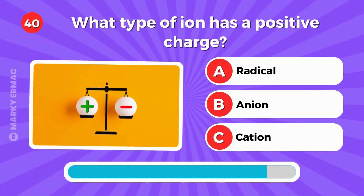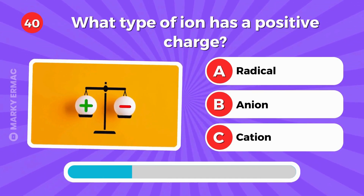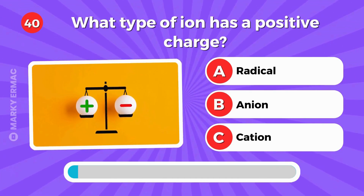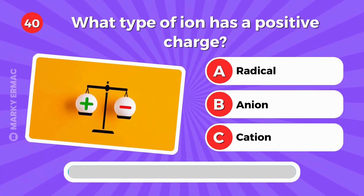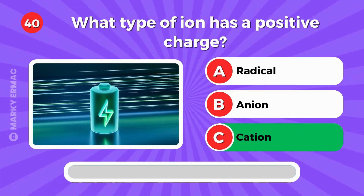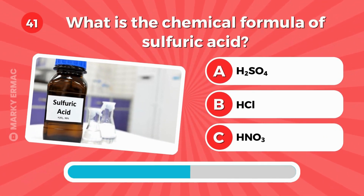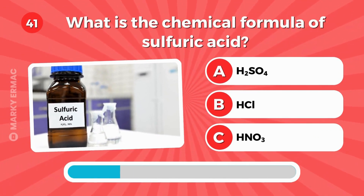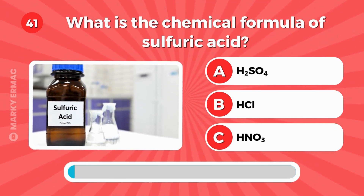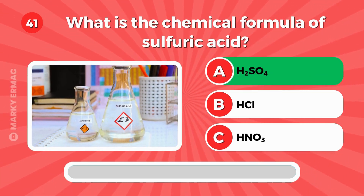What type of ion has a positive charge? What is the chemical formula of sulfuric acid? It's letter A — H2SO4.